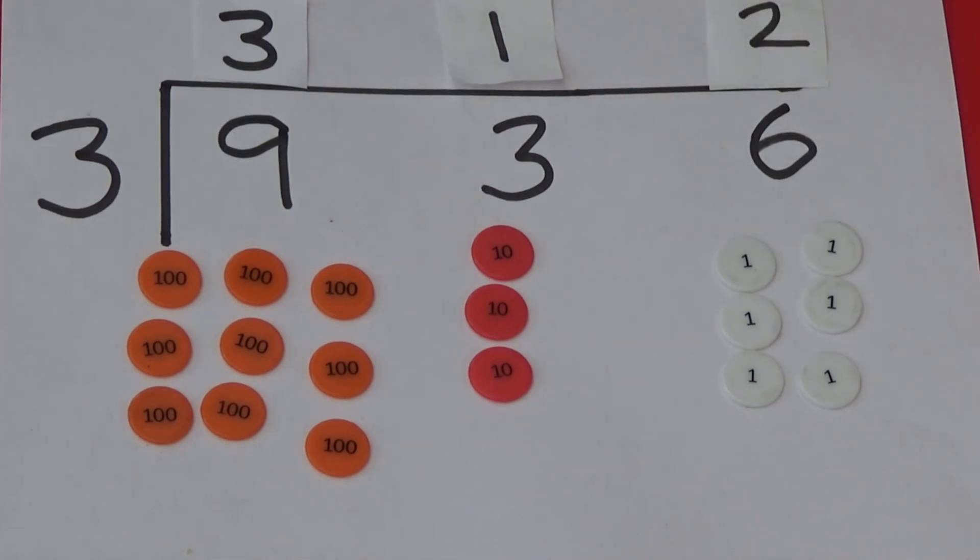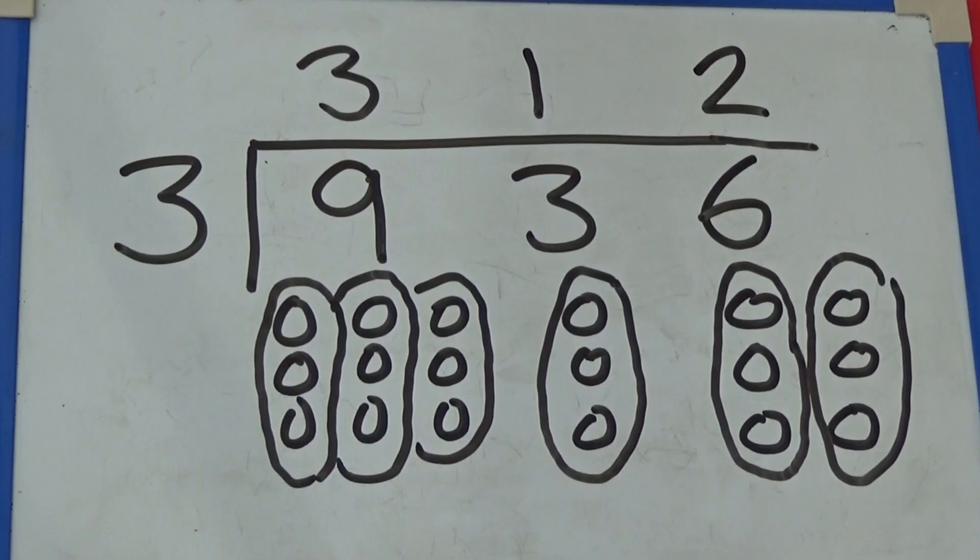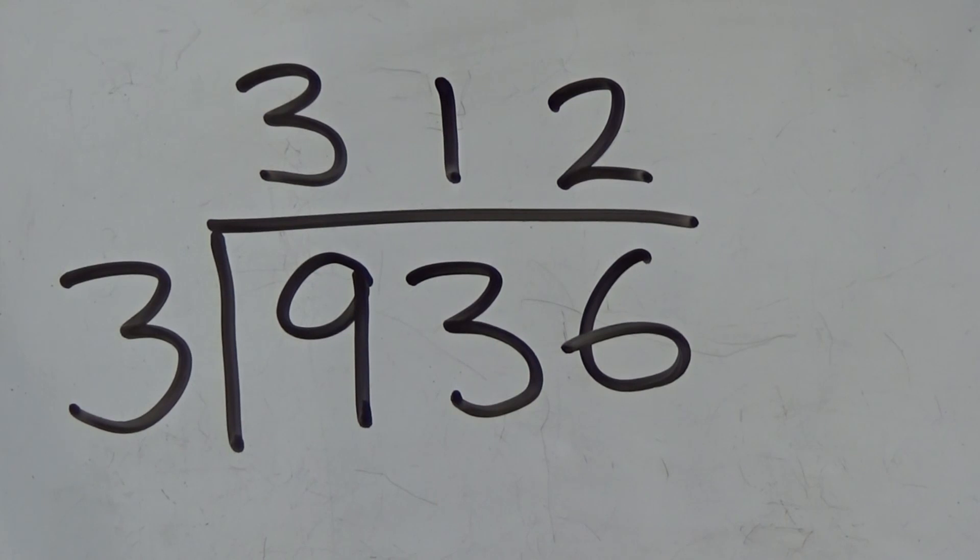So 936 divided by 3 equals 312. Once we can do this with counters I can represent the counters as a picture. Finally, we can record the answer without the counters.